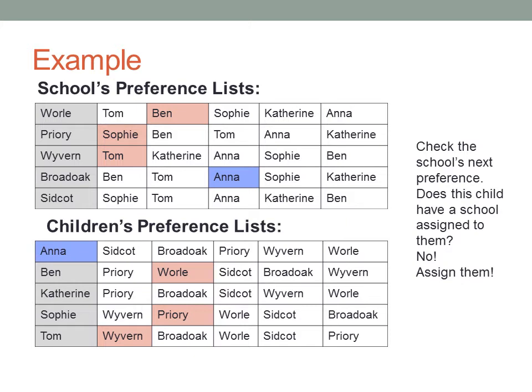Broad Oak's next preference is Anna. Anna is not yet assigned to a school, so we can assign her to Broad Oak.